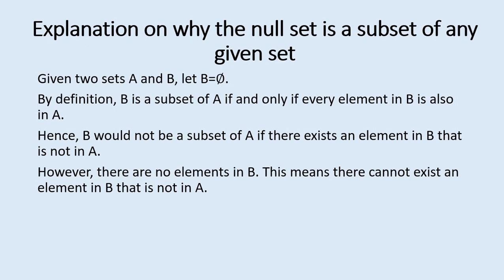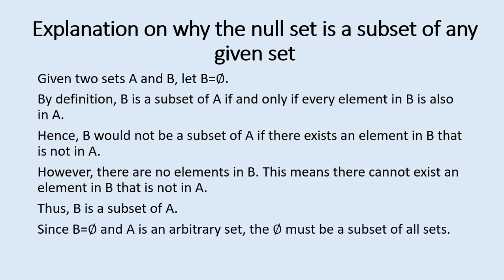However, there are no elements in B — B is just the empty set. This means there cannot exist an element in B that is not in A. The empty set, as the name suggests, is empty, so we cannot show that it is not a subset of A, and hence B is a subset of A. Since B is the empty set and A is some arbitrary set, the empty set must be a subset of all sets.